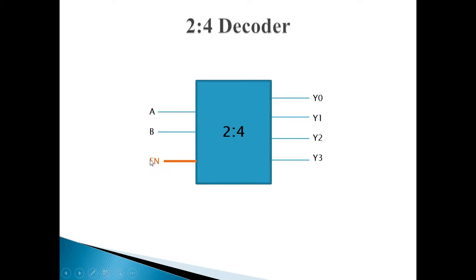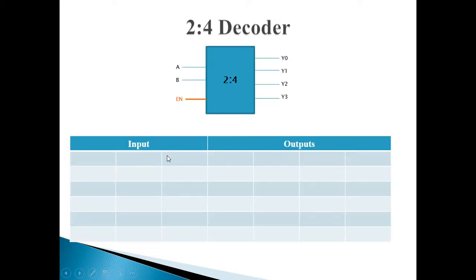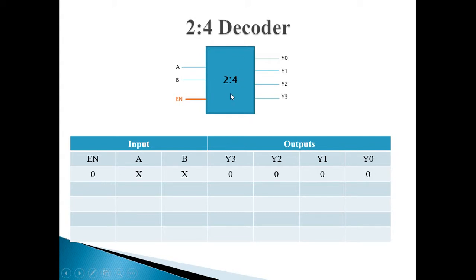Whenever there is a signal applied to the enable pin, then only this decoder will work. Here is the truth table for this decoder. Inputs are enable, A, and B. Outputs are Y0, Y1, Y2, Y3. Consider the first case: enable signal is 0. Then whatever may be the inputs A and B, all outputs will be 0, because the decoder is not enabled. So to function this decoder, we should give enable signal 1.